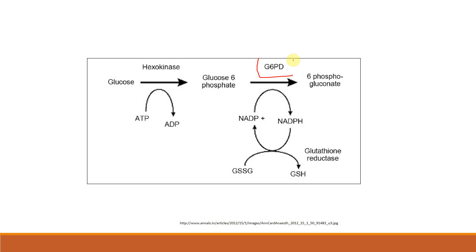She has a deficiency of glucose-6-phosphate dehydrogenase. This enzyme converts glucose-6-phosphate to 6-phosphogluconate, reducing NADP+ to NADPH, which drives glutathione reductase to produce glutathione. With G6PD deficiency, she has little glutathione. When dapsone adds oxidative stress, demand outpaces supply, leading to red cell hemolysis, worsening anemia, and new-onset jaundice.